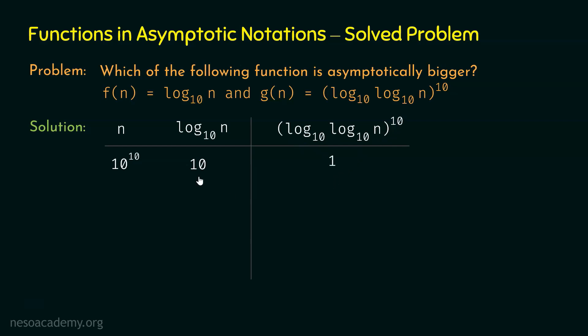We can observe that f(n) is bigger than g(n). But can we conclude that f(n) is always bigger than g(n)? Here we got 1, and 1 to the power 10 is 1. What if we have 2, 10, or 100 here? Can we still say that f(n) is greater than g(n)? Let's find out.